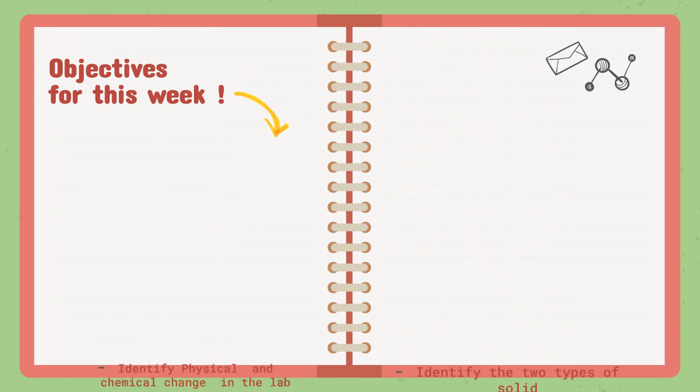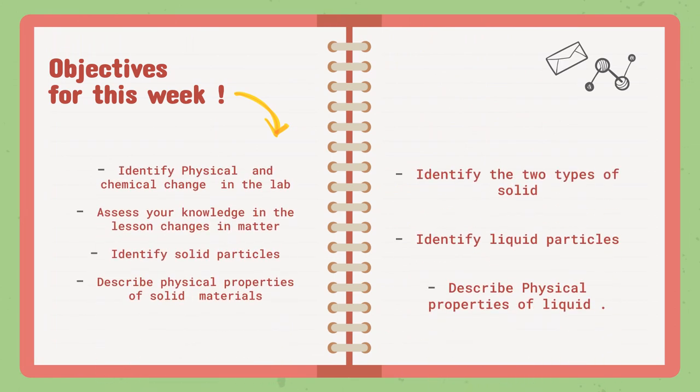For this week's objectives, we are going to finish up the lesson Changes in Matter by having a lab class where we are going to identify physical and chemical change in the lab, and do experiments that show us physical and chemical change.